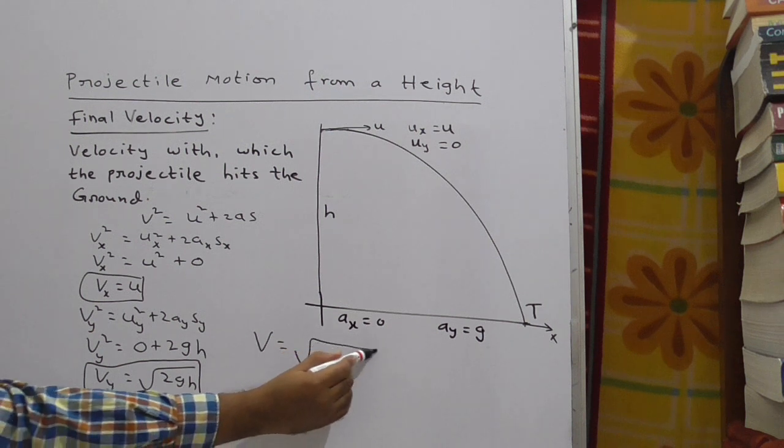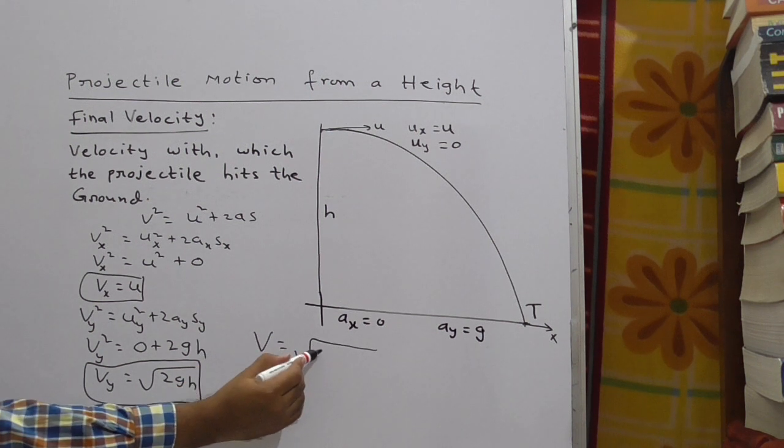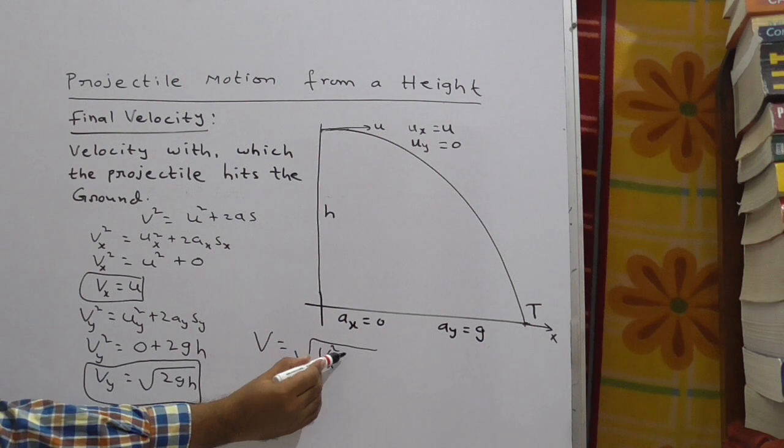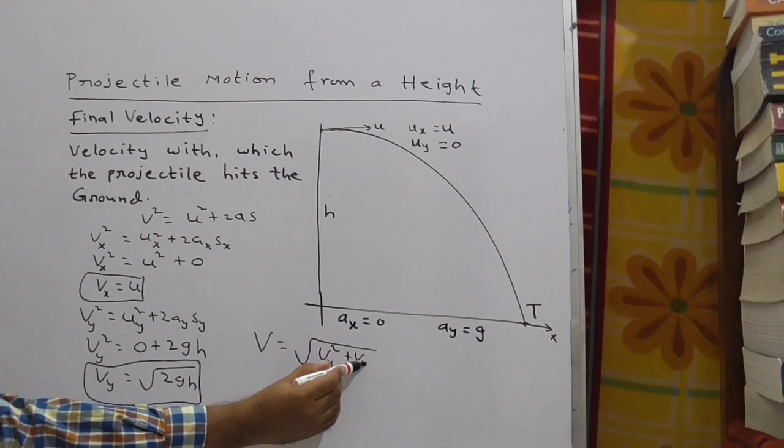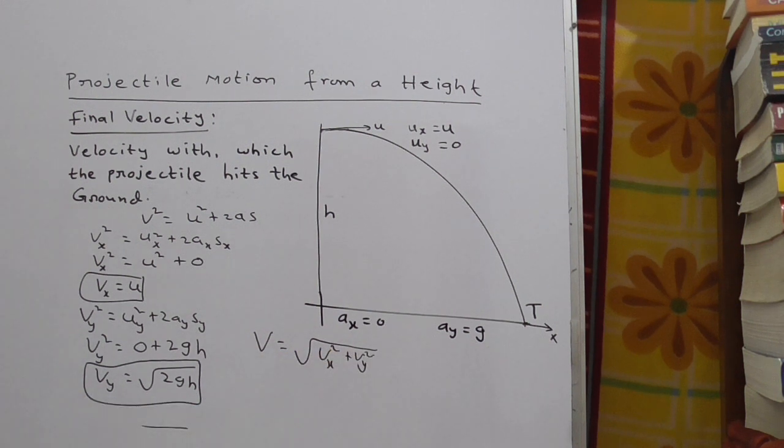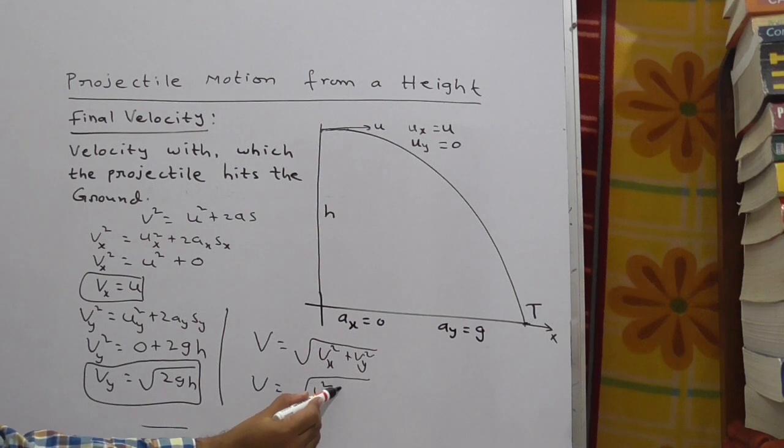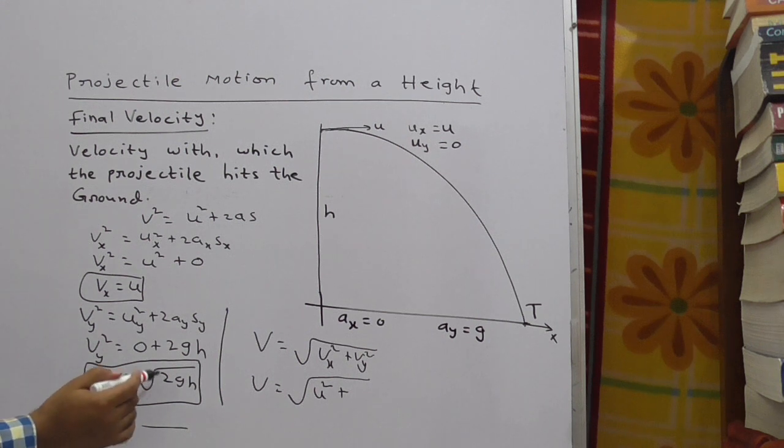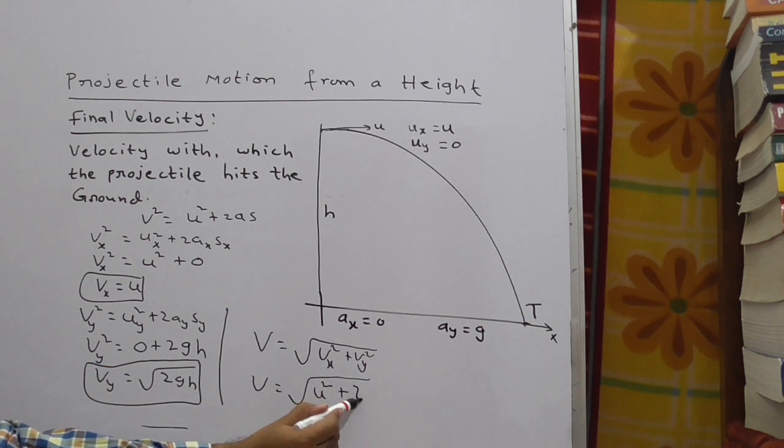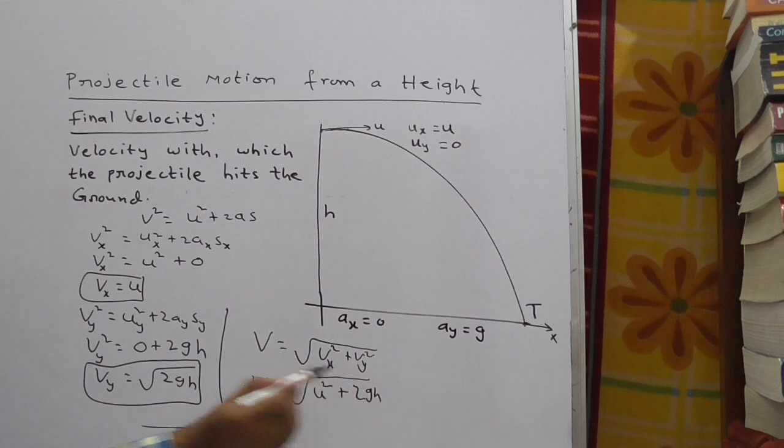V = √(v_x² + v_y²). Now V = √, substitute these two values. What is v_x here? u. Therefore, u² plus v_y is √(2gh). The square root gets cancelled, you get 2gh.